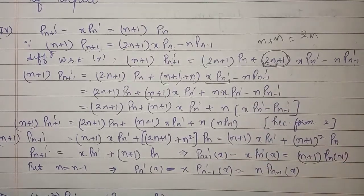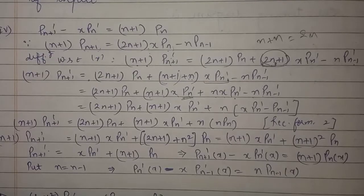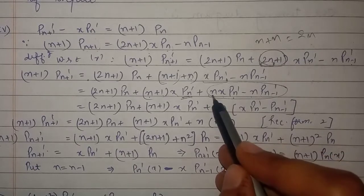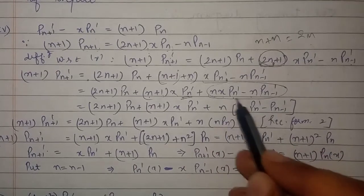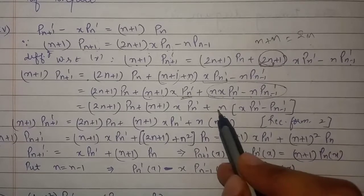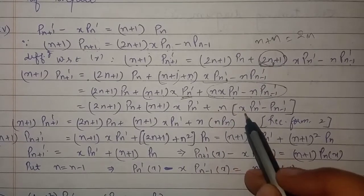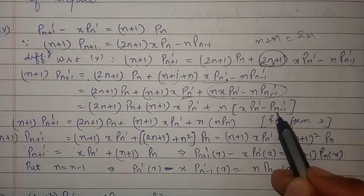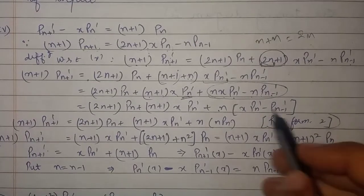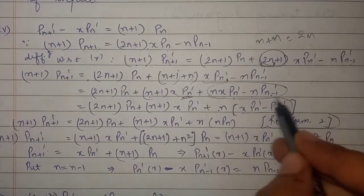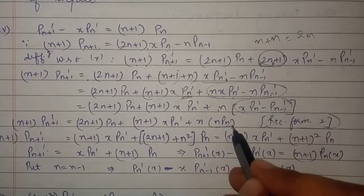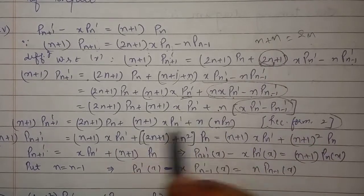The other terms remain as they are. In the last two terms we have n in common, so we take n common from those last two terms, giving n times [x·P'(n) minus P'(n-1)]. We know from recurrence formula number three that this bracketed term equals n·P(n), so we substitute that.